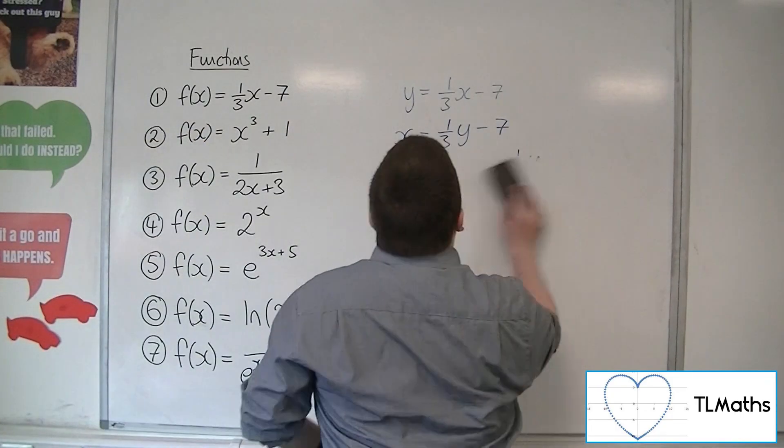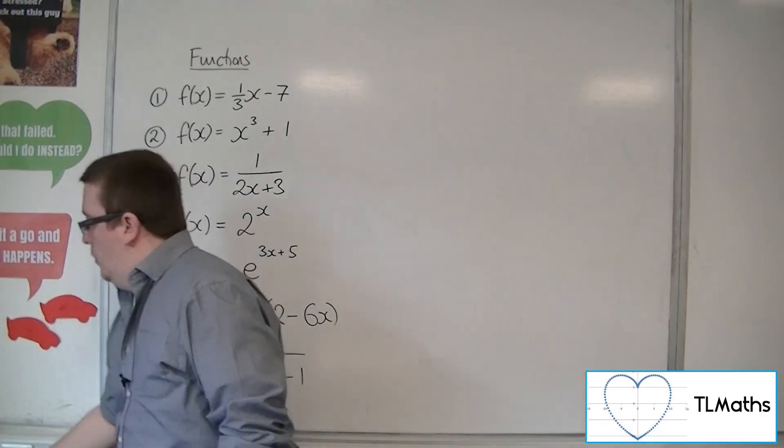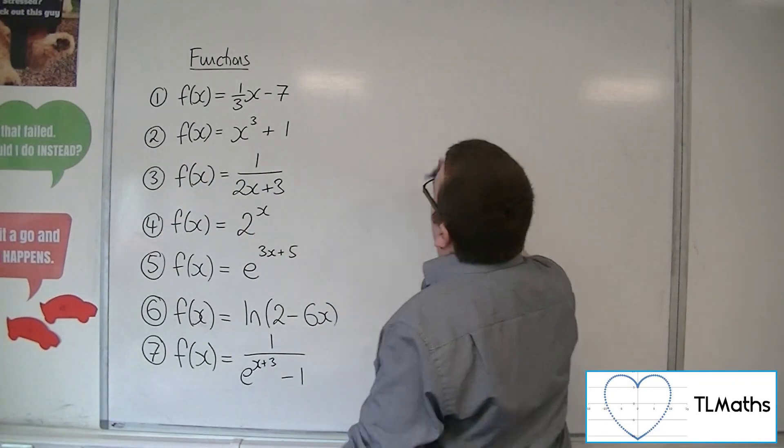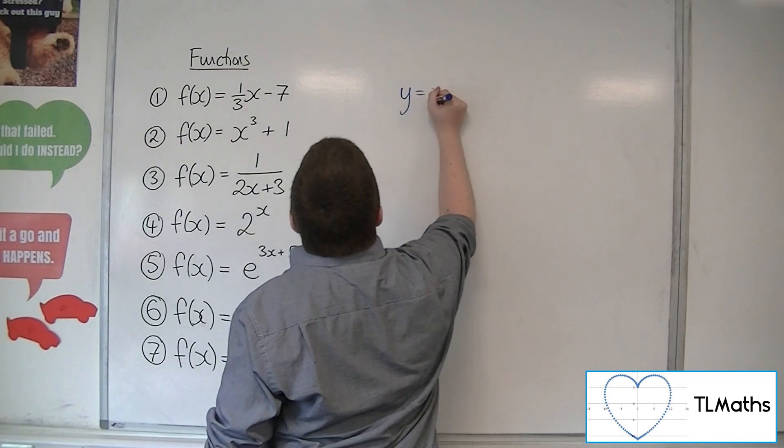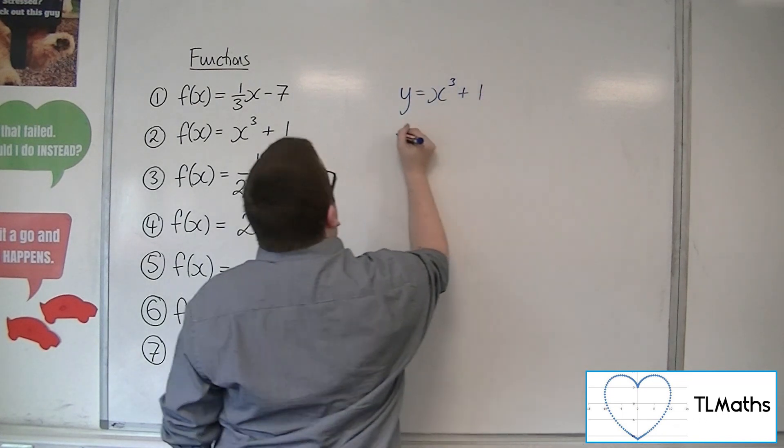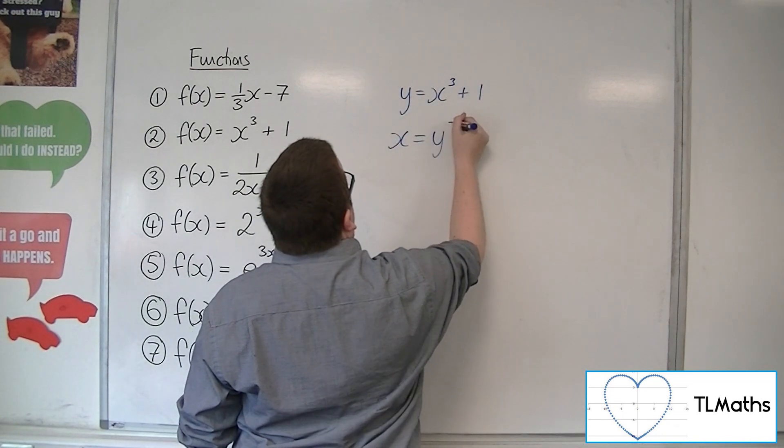Number two, we've got x³ + 1. So y = x³ + 1. Swap the x's and y's.